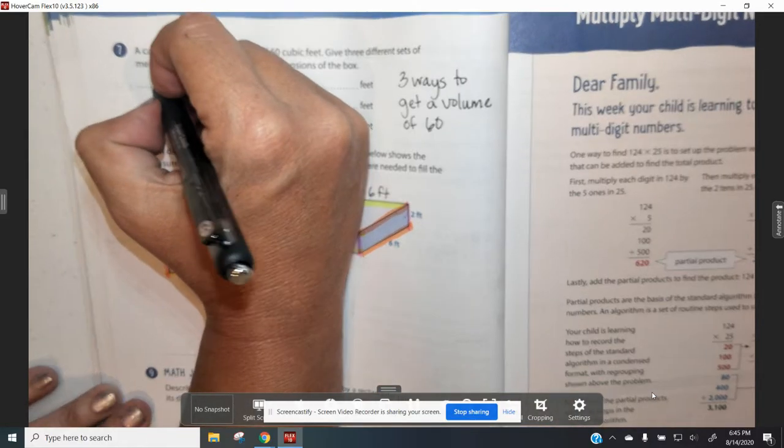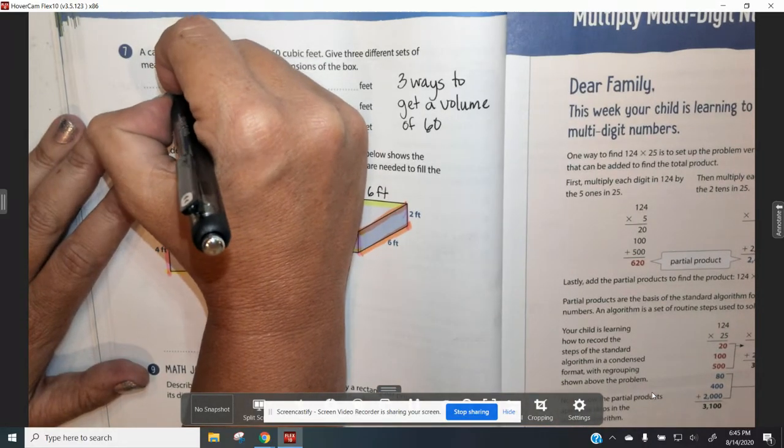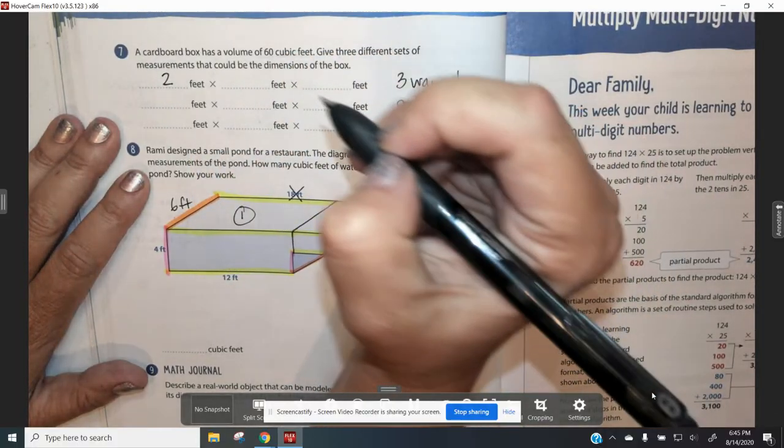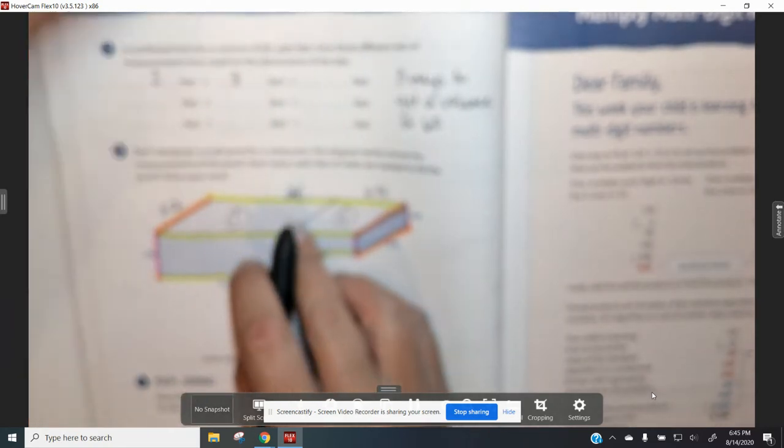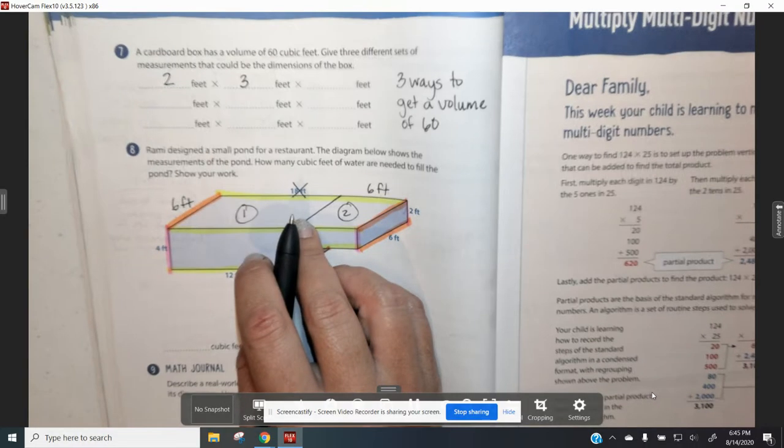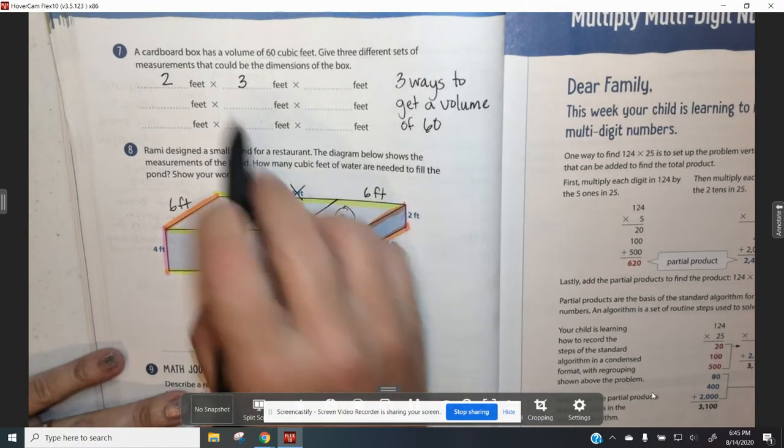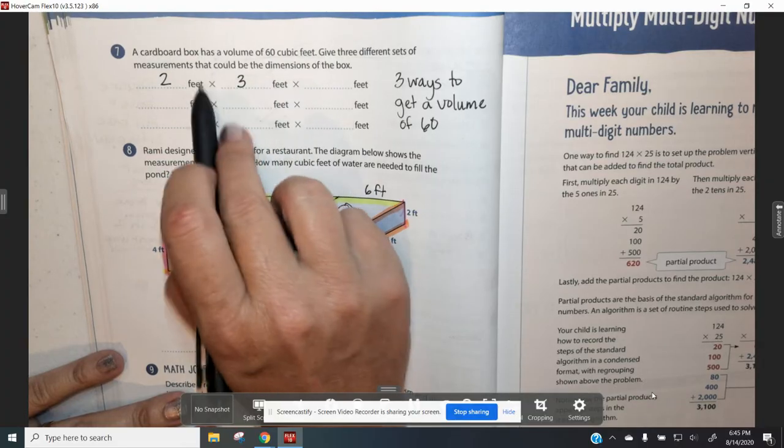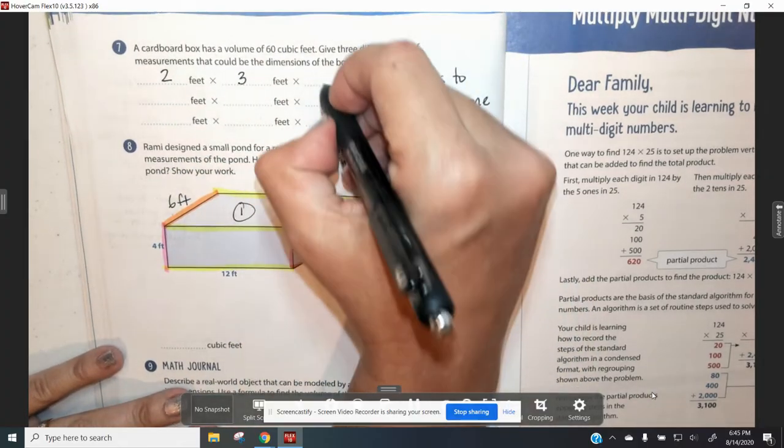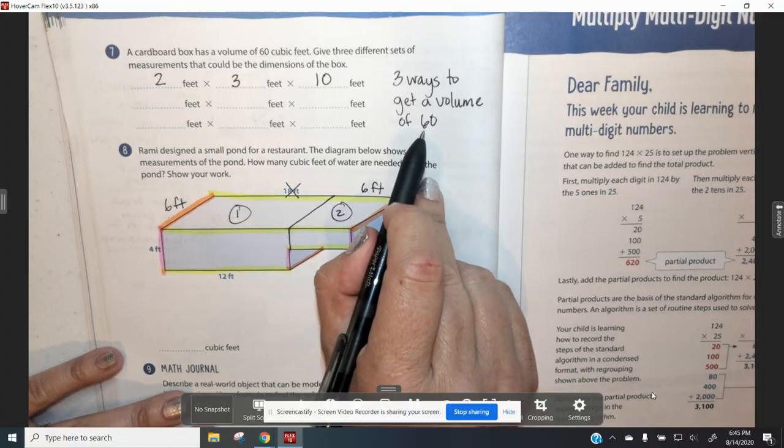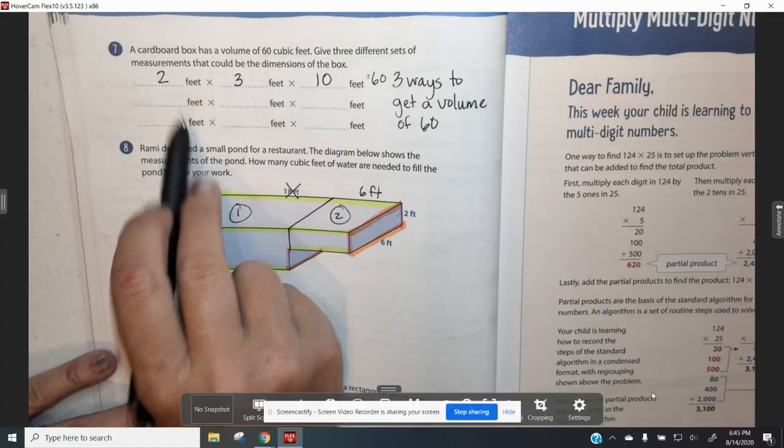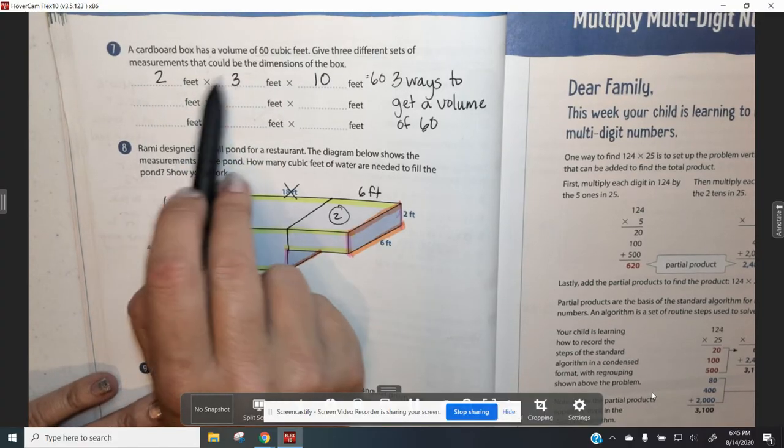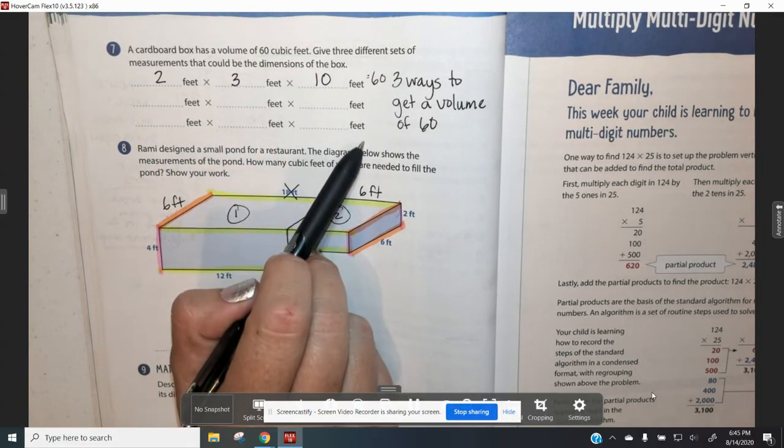Two times three is six, so let's get that focus before I move on. All right, there we go. So two feet times three feet is going to give us six feet. And then six feet times 10 feet gives us a volume of 60. So what are two other ways that you could multiply three numbers to get 60?